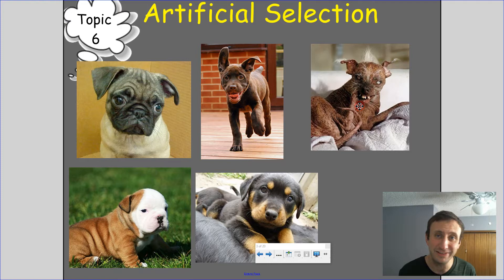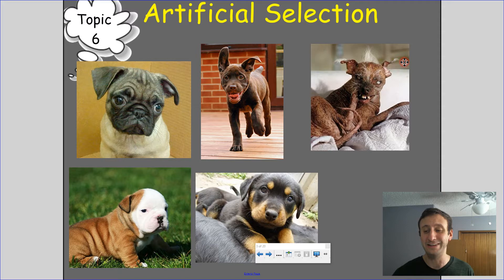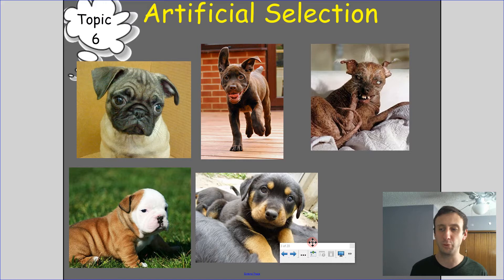It's the same species, but over time people have selected traits they like or want in an animal or a pet — like ugliness — and they keep selecting the ugliest animal to carry its genes forward until they get the ugliest animal they possibly can. Or maybe the cutest, in this case right here.